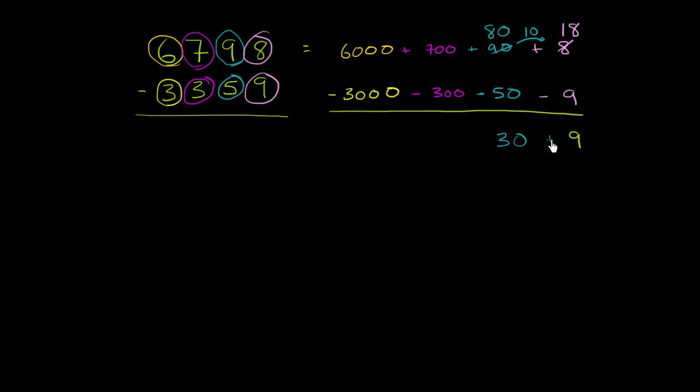And these are all positives. So this is plus 9. This is a positive 30. 80 minus 50 is 30. I have 700 minus 300, which is 400. And I have 6,000 minus 3,000, which is 3,000. So this is literally going to be 3,000 plus 400 plus 30 plus 9 or 3,439.